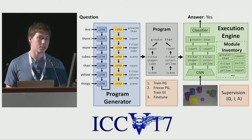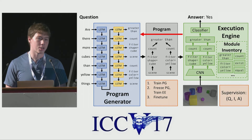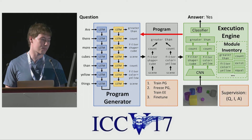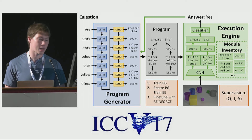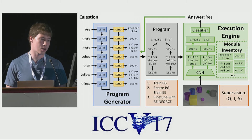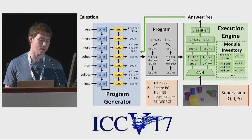Finally, in the third stage, we jointly fine-tune both components of the model. However, there's a slight technical challenge here. Because the program was produced via sampling inside the program generator, we cannot directly back-propagate through this discrete structure. To get around this, we use the REINFORCE algorithm to compute a policy gradient, which allows us to back-propagate into the program generator and train the entire model jointly even when we don't observe any programs.